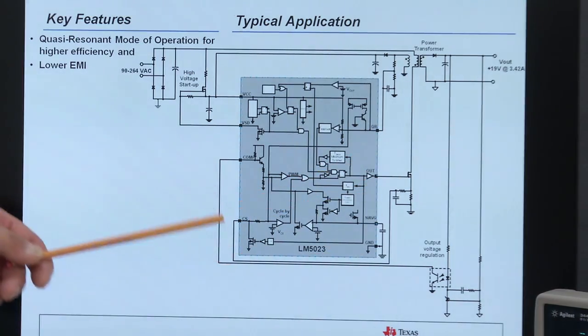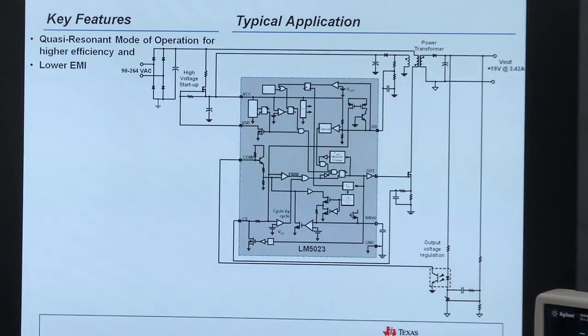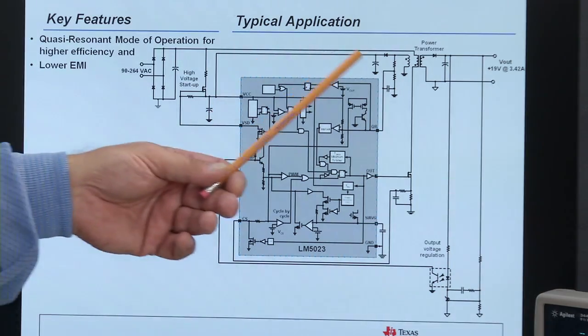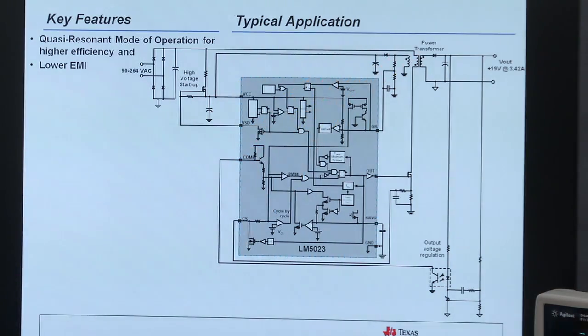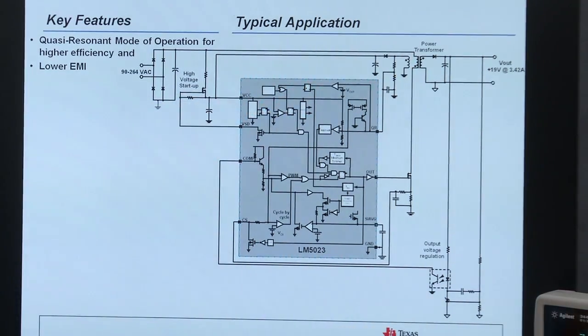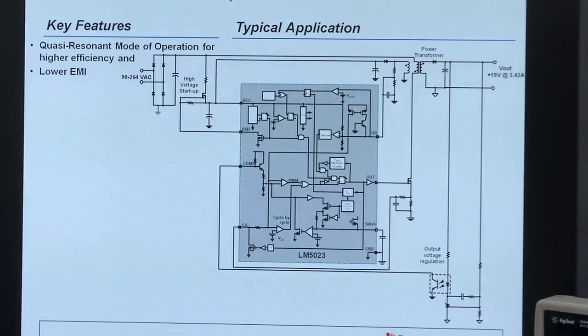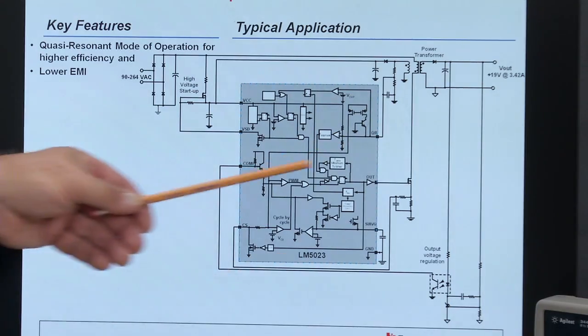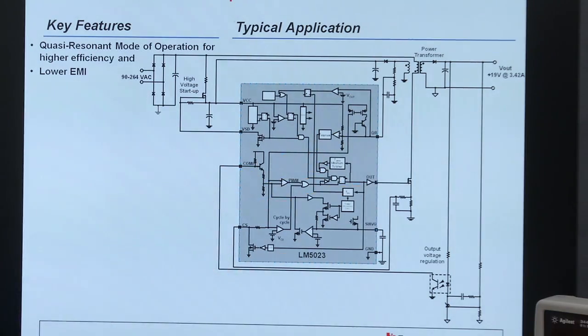We then compare that signal to the peak primary current. When the power switch is on, we apply VIN across the transformer primary. Because of the phasing of the auxiliary winding and the secondary winding, both of these diodes are reverse biased. So we store all the energy in the transformer primary. The peak current starts out at zero, ramps up to I-peak, where it's compared to the compensation voltage, and we turn our primary switch off.